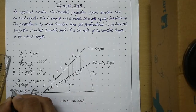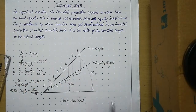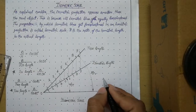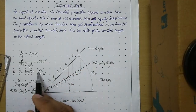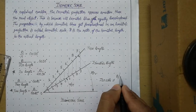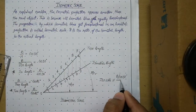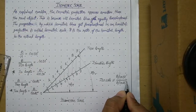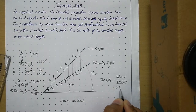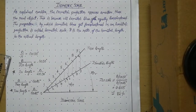We now have the value of isometric length and the value of true length. The isometric scale is the ratio of isometric length to actual length. Isometric length is base divided by cos 30, and actual length is base divided by cos 45. When you solve this ratio, you get 0.8165, which equals approximately 82%. I hope the procedure of drawing the isometric scale is clear to you. Thank you very much.